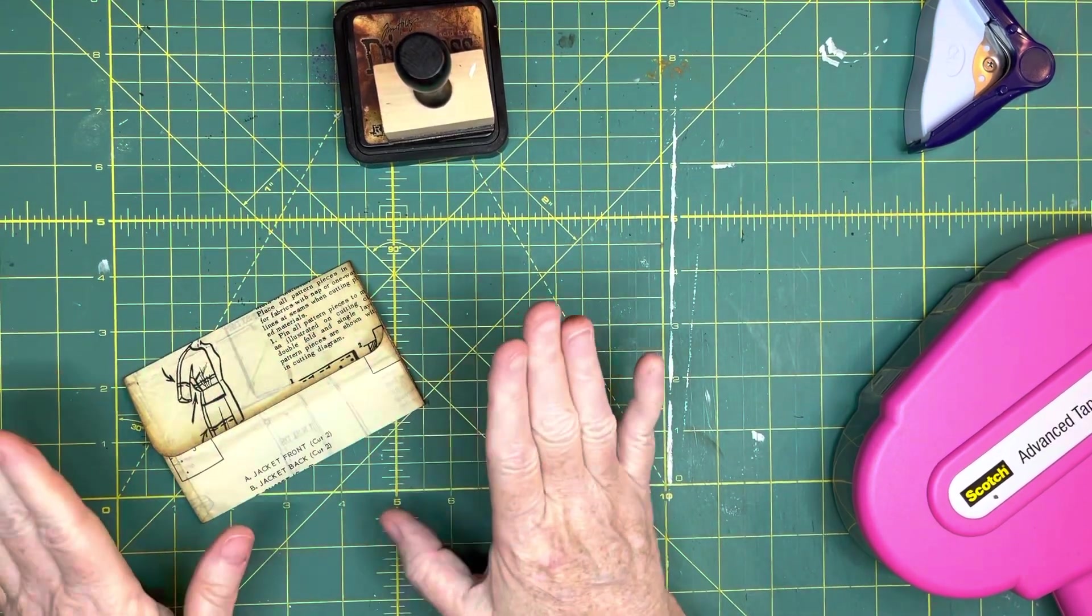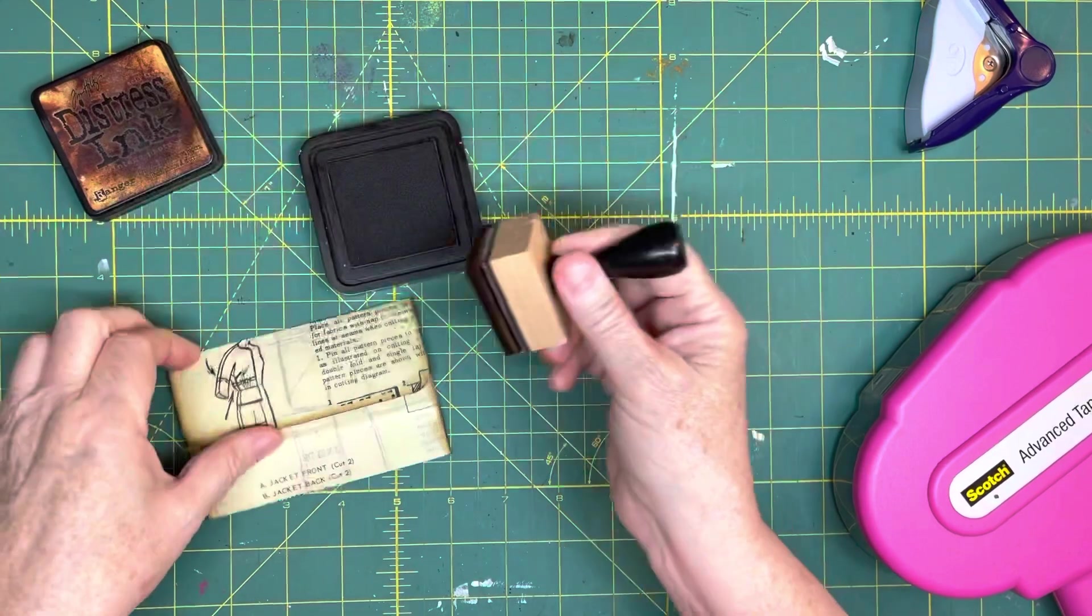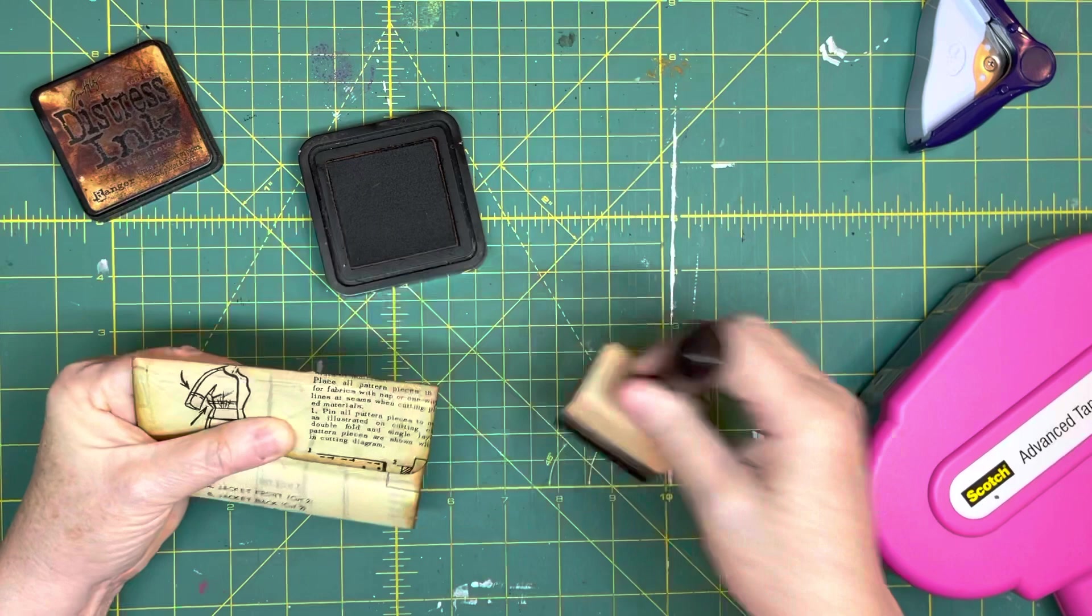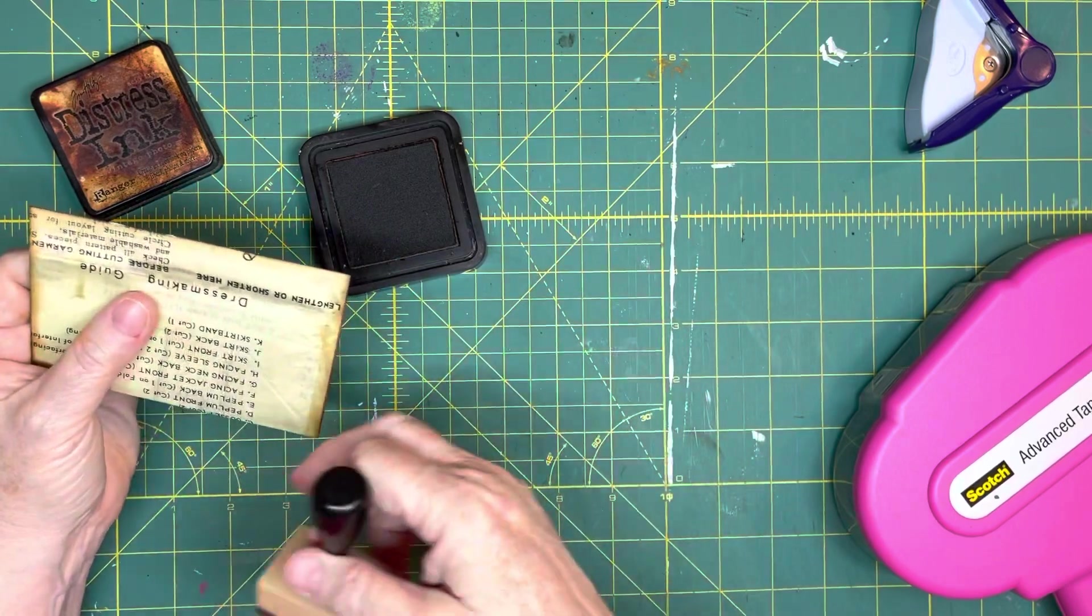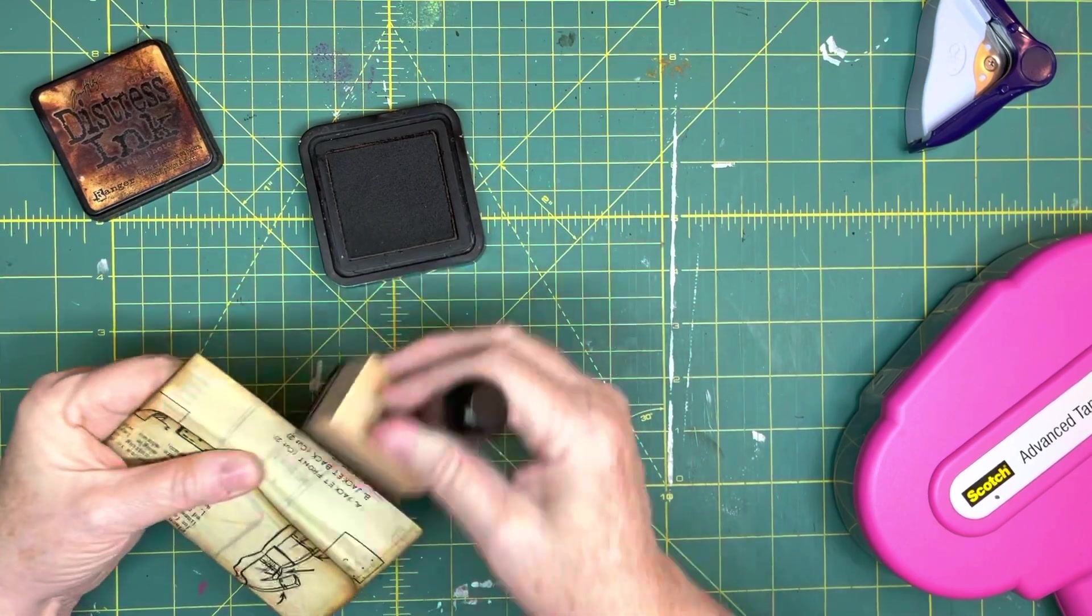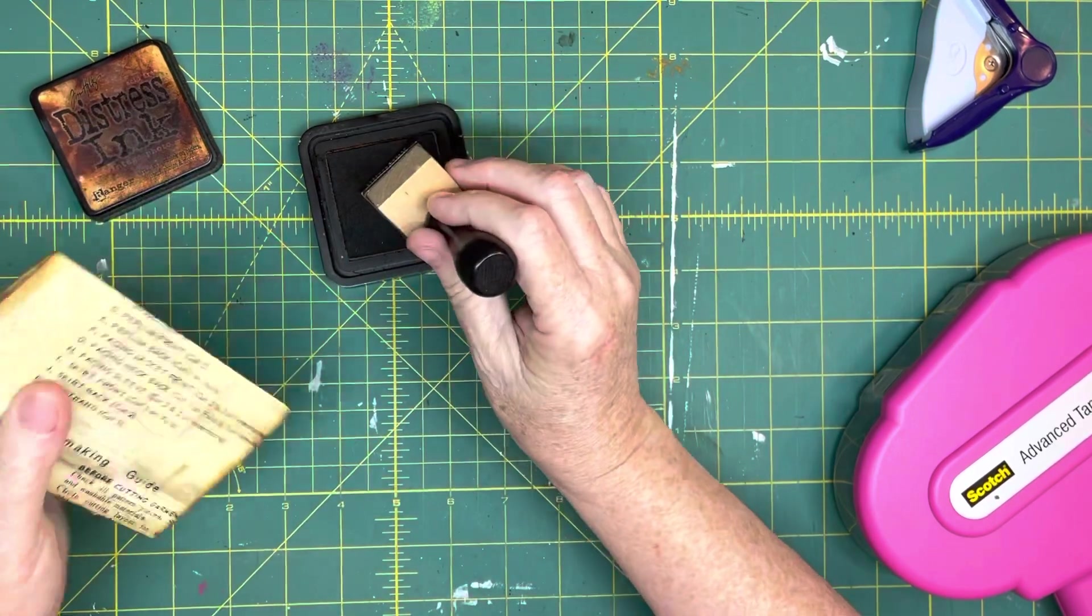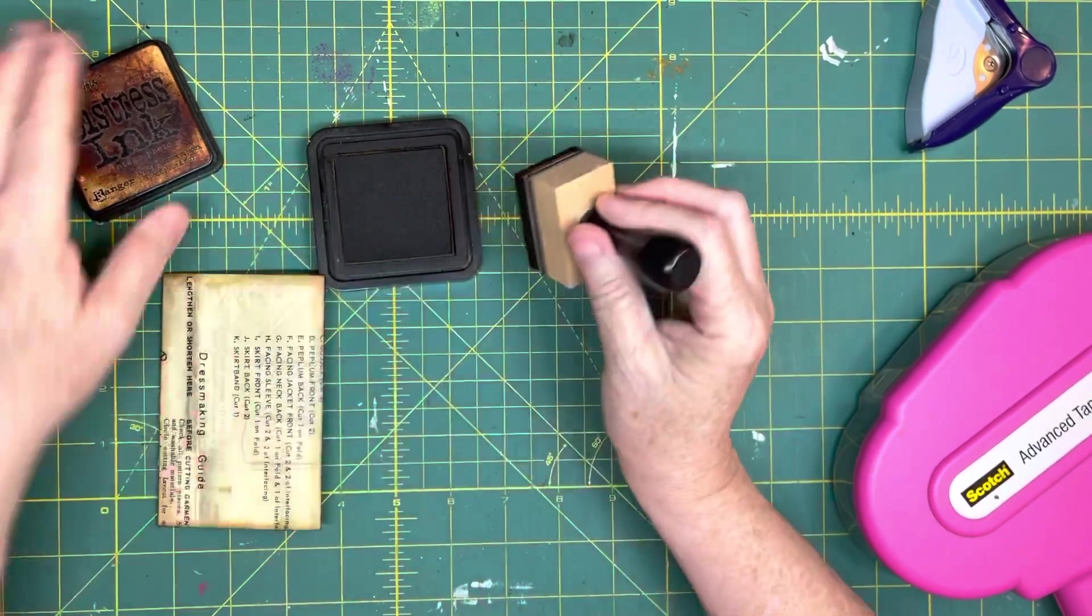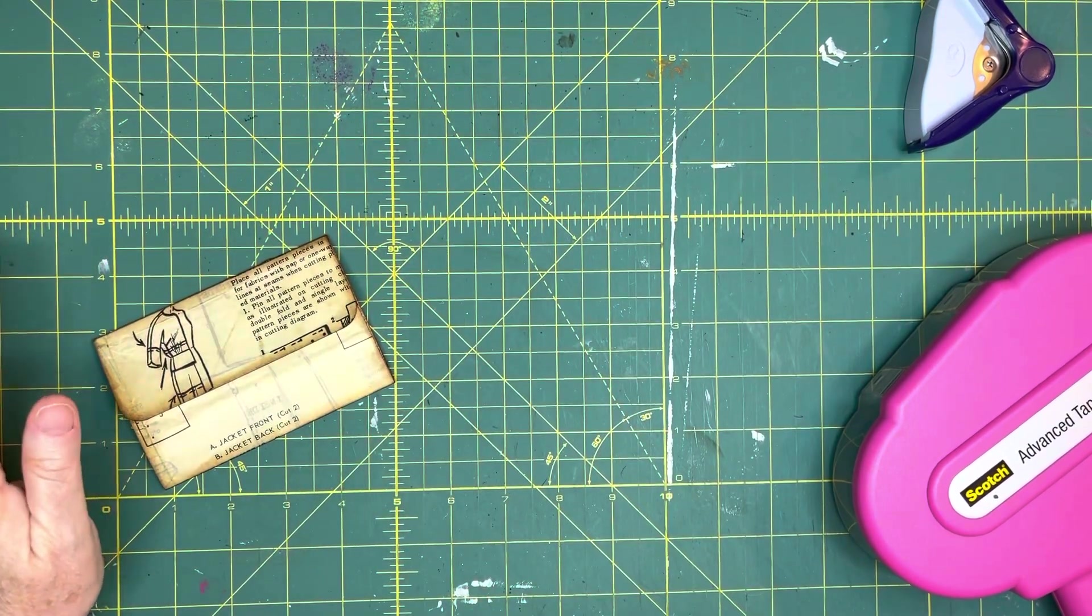Now if you want to, you can do what I do which is I like to ink this edge here, across the top, ink the back. That's the only place where the design is upside down is on the back of the envelope, but that's what comes with using directional paper. The important part is the front and the top both have the pattern going in the right direction. So there you go. I'll bring the other ones in for you to look at.